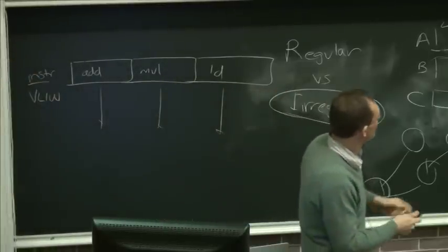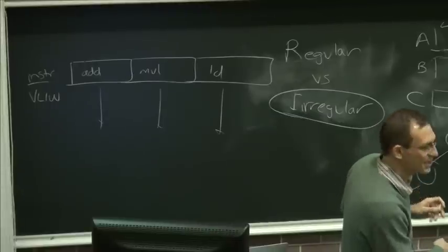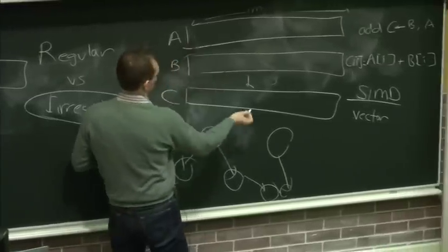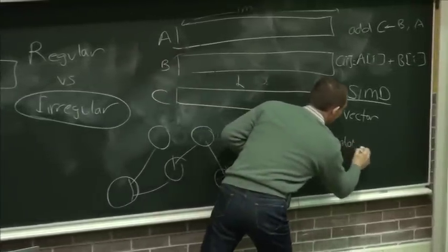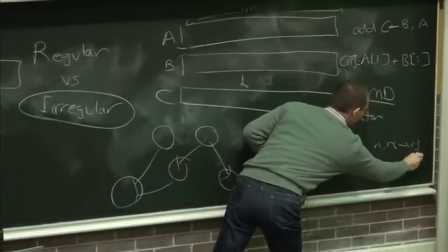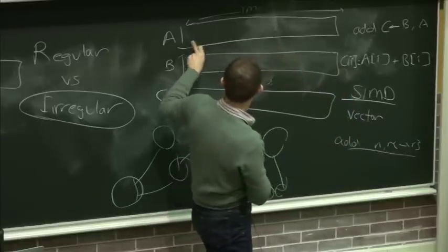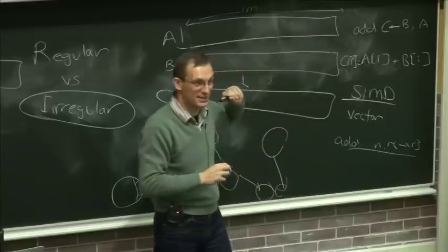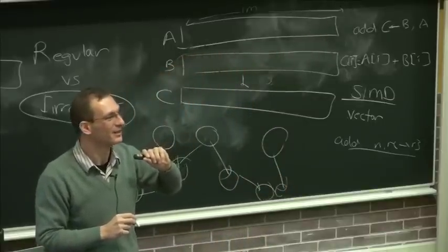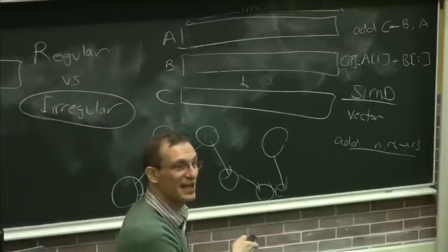You can mix and match — you can have vector instructions as well as scalar instructions. A scalar instruction like ADD R1, R2, R3 operates on only one piece of data, whereas a vector instruction operates on a million pieces. These are all choices you make when you design an ISA. Many of today's ISAs do have vector instructions.